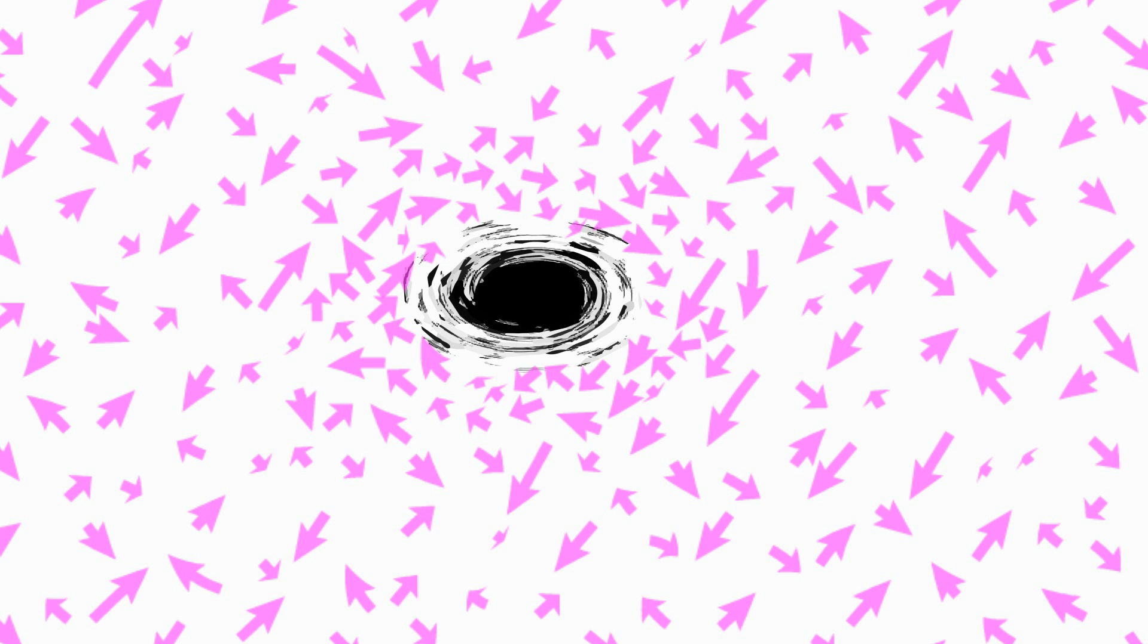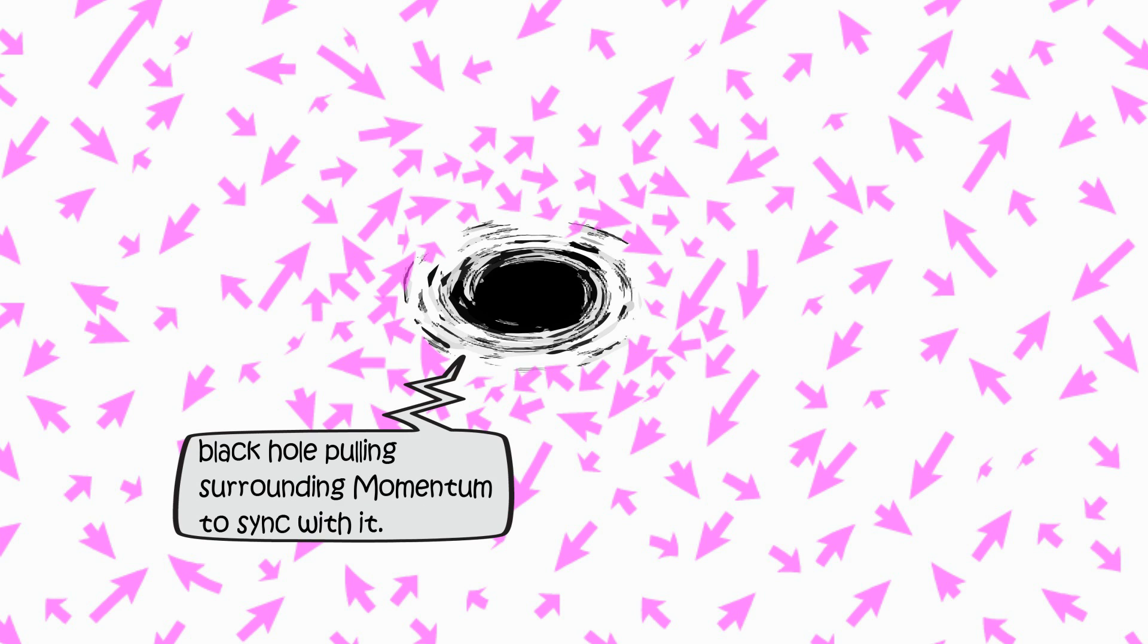Big Bang. Singularity is pulling full momentum and synchronizing all into the same configuration. When singularity is pulling space, every action causes an equal and opposite reaction. Space is also pulling the black hole outwards.